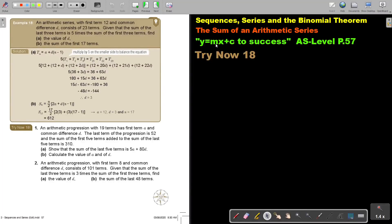In this video, we are going to continue with the sum of an arithmetic series. You will find this on page 57 in the Namibia AS level mathematics textbook Y equals MX plus C to success.